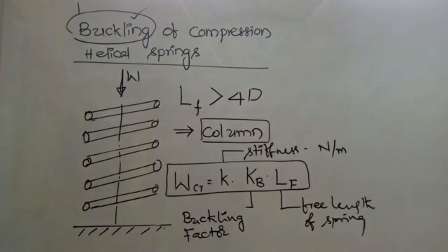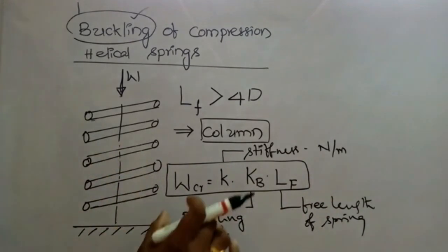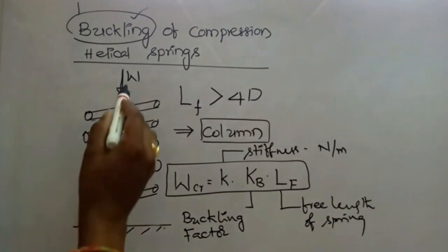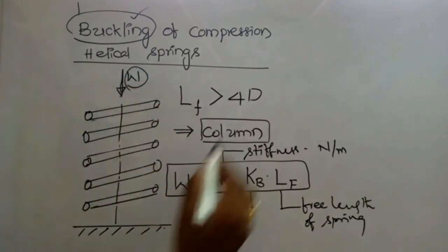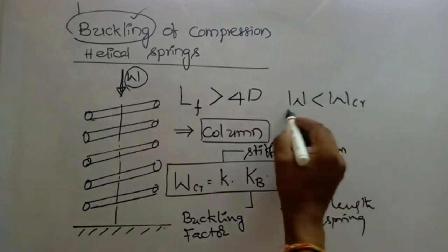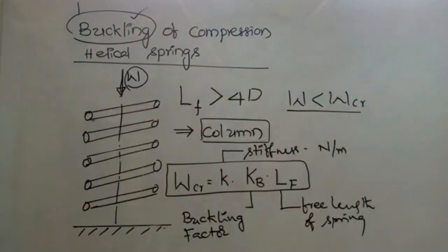This buckling load W_cr is a limiting load — it is the maximum load that can be applied on the spring. Beyond this value, there is a chance of buckling. The load acting on the spring W must always be less than W_cr to avoid buckling of the compression helical spring. This concludes the topic of buckling of compression helical springs.